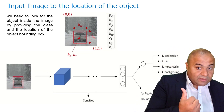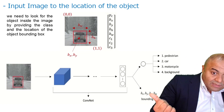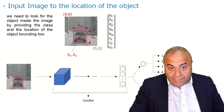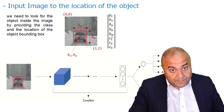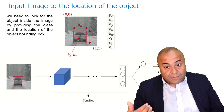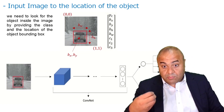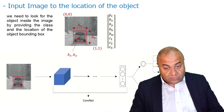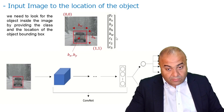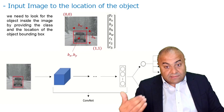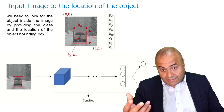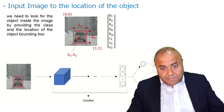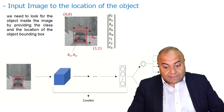YOLO tries to predict the bounding box location and dimensions, denoted by BX, BY, BH, and BW. Along with that, YOLO will also predict if there is an object or not — this is a probability or confidence score, regardless of the type of object. The last thing YOLO predicts is the class of the object, for example a dog, a bicycle, or a car.